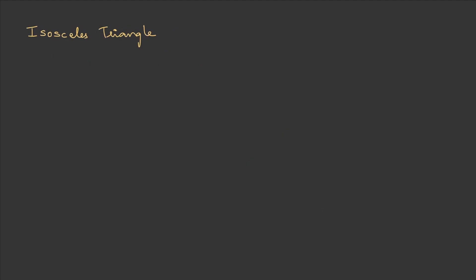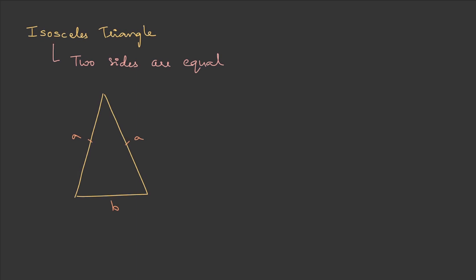Now we have the isosceles triangle, where only two sides are equal. Here is a sample figure with the two equal sides as a, and the unequal side as b. Let the height of the triangle be h, and this base segment will be b/2. Again using the Pythagorean theorem: h = √(a² − (b/2)²), which simplifies to h = (1/2)√(4a² − b²).